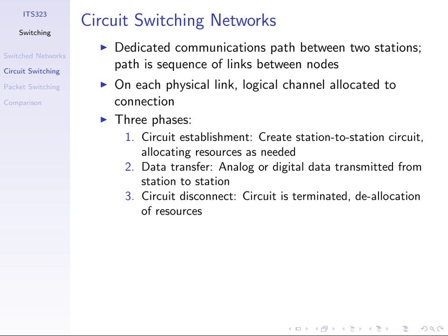Using our telephone network as an example: circuit establishment happens when you pick up your phone and dial the destination number — that sends a message, and when they pick up, a message comes back. The data transfer is you talking — your voice is the data, sent as an analog signal across the telephone lines. When you hang up, the circuit disconnect triggers a special message to the telephone exchanges saying the phone call is finished, and they deallocate the resources for use in future calls.